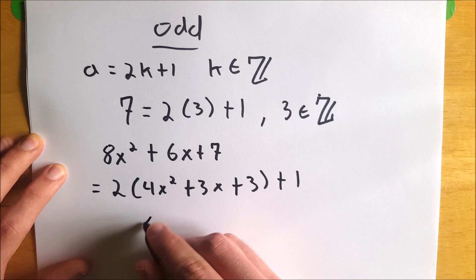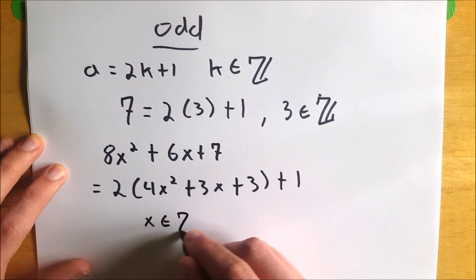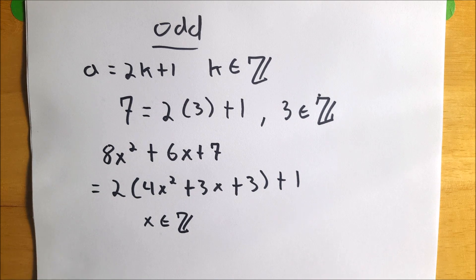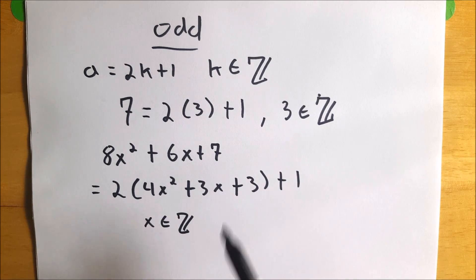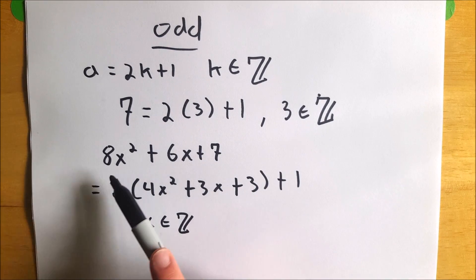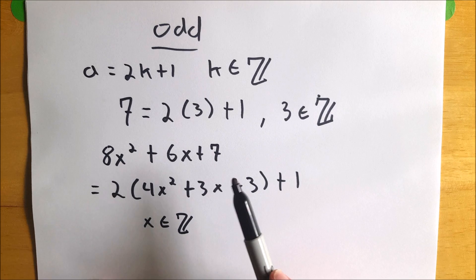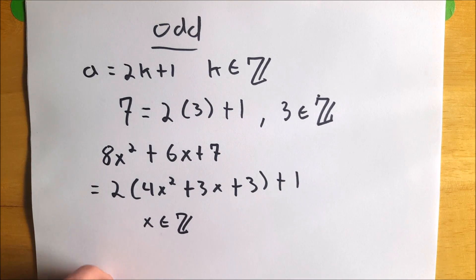If we know that x is an integer, then we know that this whole expression is an integer by closure under the integers. It says when you add them, they will still be integers as well as a few other things, but that's what we're using here. So 2 times some integer plus 1 is equal to this polynomial. Therefore, we know that this polynomial will always be odd when x is an integer.